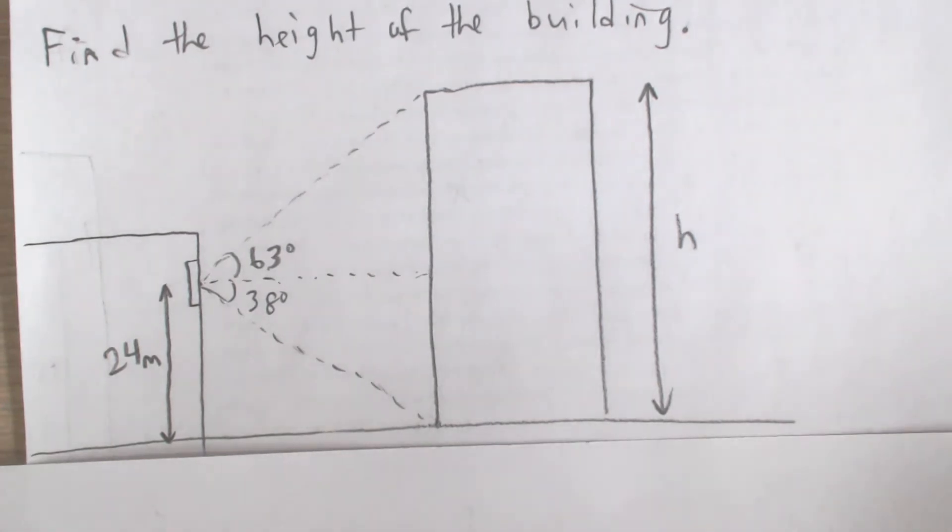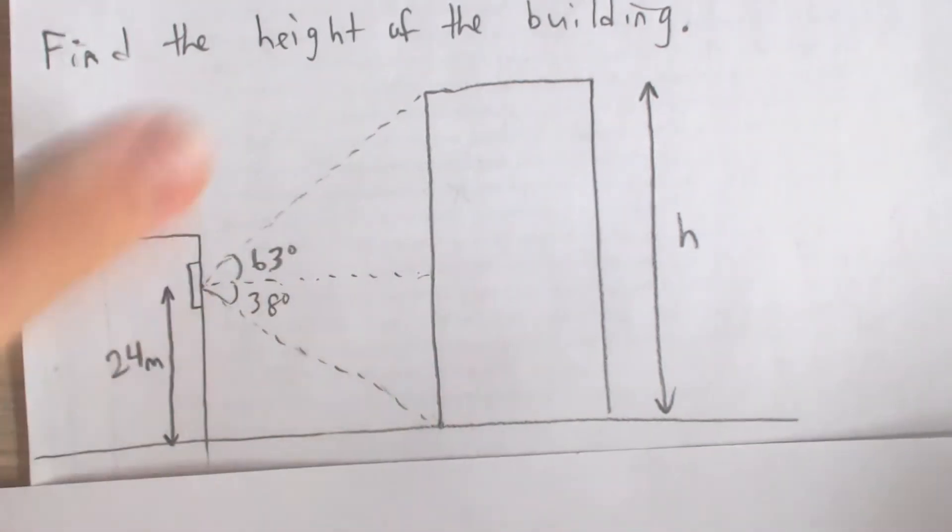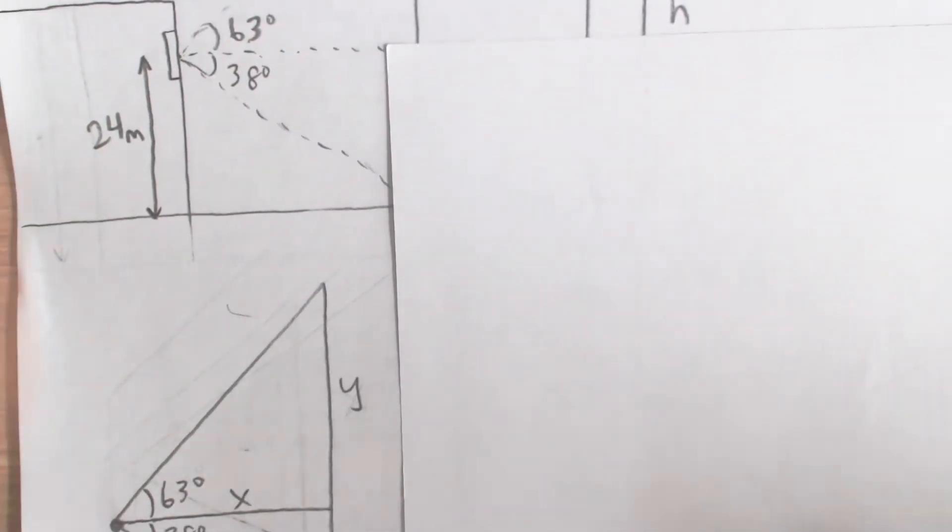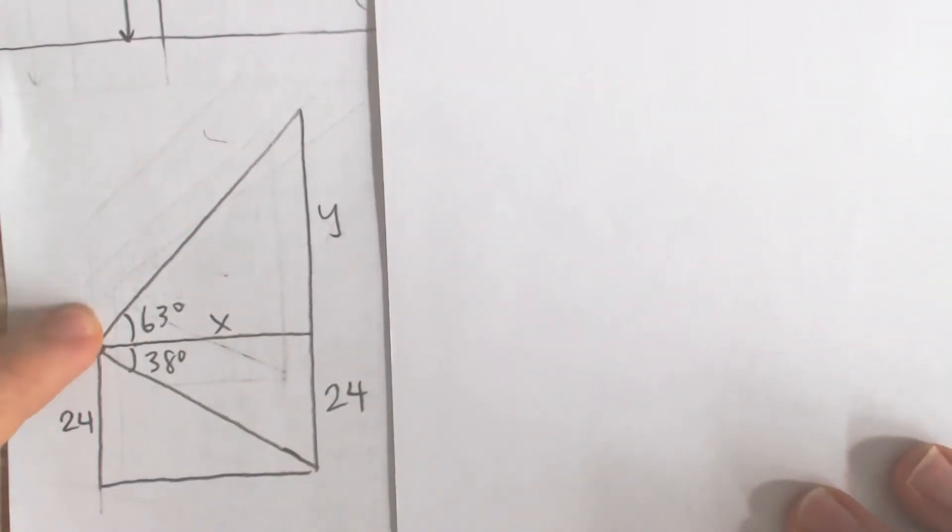Here's how we're going to go about doing this. I'm going to redraw this, but just focusing on the triangle. So here we go, move this to the right just a bit. Here's our triangle—this length is 24.